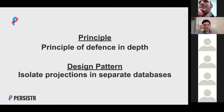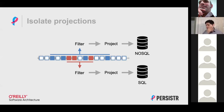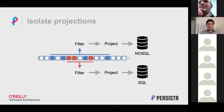The next principle is defense in depth. The design pattern that matches it is isolating projections in separate databases. Projections read events, aggregate data in some way, and write that aggregate information into some other database outside of the event stream — that could be SQL, NoSQL, flat files, anything outside the event stream. A projection is really anything that projects onto some other data store. Projections are really useful for microservices. For example, a service that sends welcome emails is standalone — it just hooks into the event stream, filters for that one event type, and sends emails.